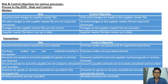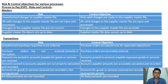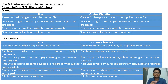Next we look at risks and control objectives for various processes — specifically P2P (Procure to Pay) and O2C (Order to Cash). For P2P, under masters, the risks include: unauthorized changes to the supplier master file, valid changes not being input and processed, changes to the supplier master file not being correct, and supplier master file data not being up to date.